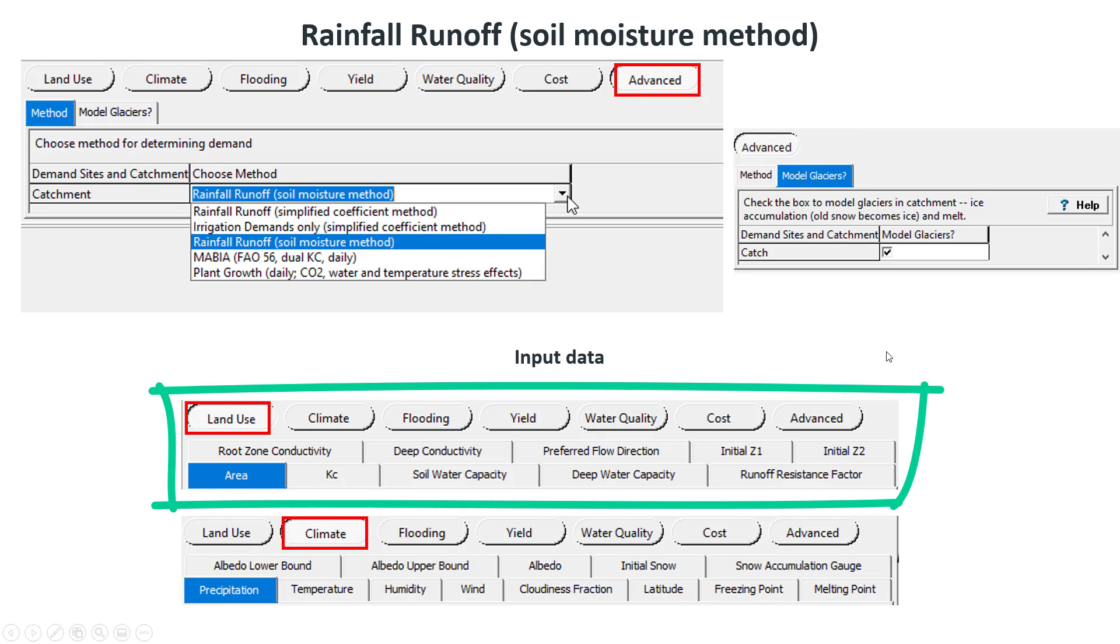The hydrological parameters of the model are entered under the land use tab. The crop coefficient, the water capacities and conductivities of each zone, the runoff resistance factor, the preferred flow direction, and the initial moisture conditions.